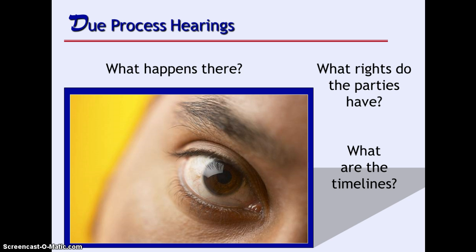During a due process hearing, each party has the opportunity to present their views in a formal legal setting using witnesses, testimony, documents, and legal arguments that each believes is important for the hearing officer to consider, so a decision on the issue in the hearing can be made. Since the due process hearing is a legal proceeding, a party will often choose to be represented by an attorney.